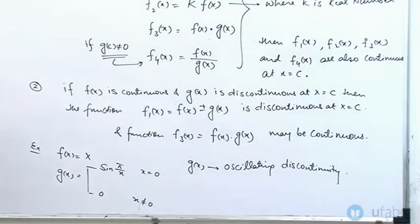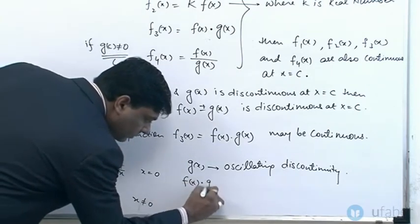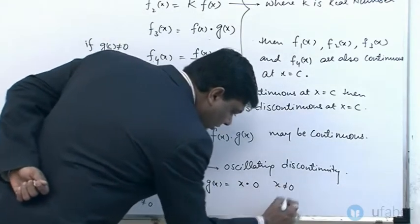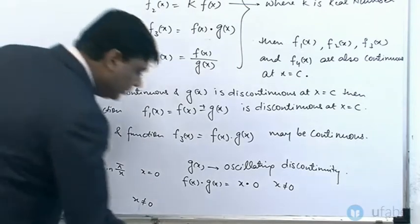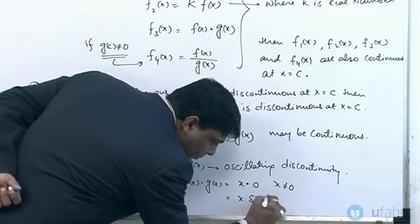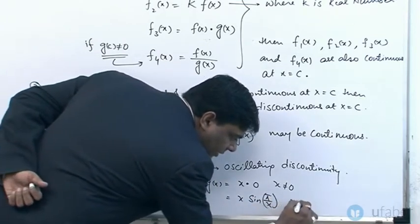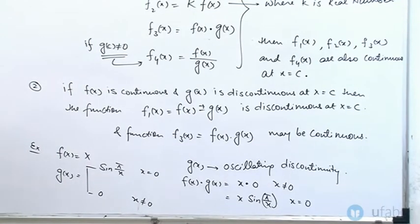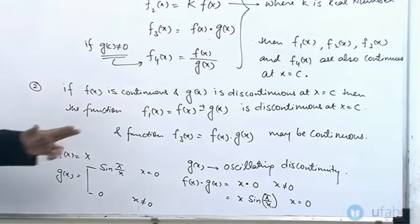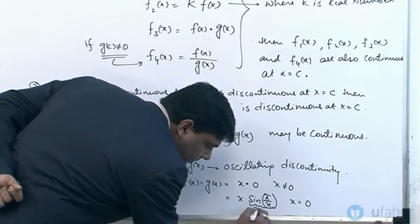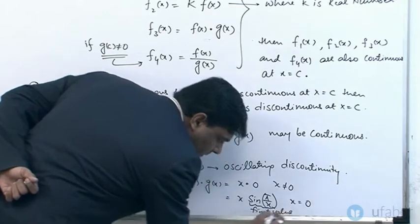Now, f(x)·g(x) equals 0 when x equals 0, and equals x·sin(π/x) when x is not equal to 0. At x equal to 0, this is a finite value, and the function defined at that point is equal to 0. This is a positive finite value, and the product is 0.